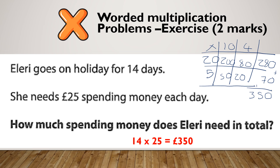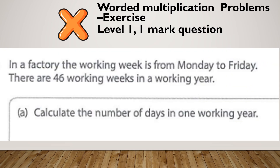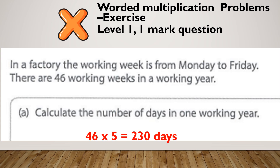Let's check out a level 1 question — a bit of stretch and challenge. In a factory, the working week is Monday to Friday and there are 46 working weeks in a working year. Can you calculate the number of days in one working year? Hopefully you got 230. Monday to Friday means there are 5 days in a working week, and there are 46 working weeks in a year, so you need to find the total number of days.